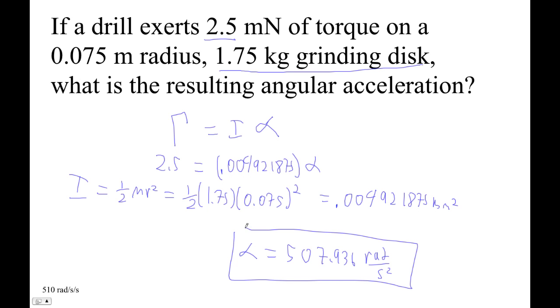And I get 507.936 radians per second squared, which with two sig figs, I guess, would be 5.10.